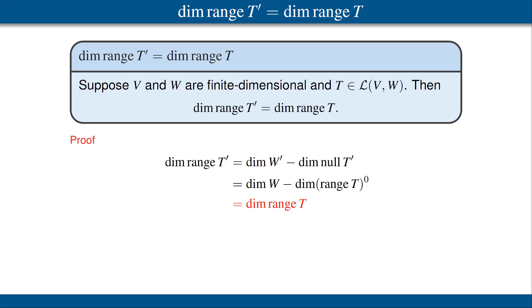Recall that the range of T is a subspace of W, and thus this is the correct formula, completing the proof that the dimension of the range of T prime equals the dimension of the range of T.